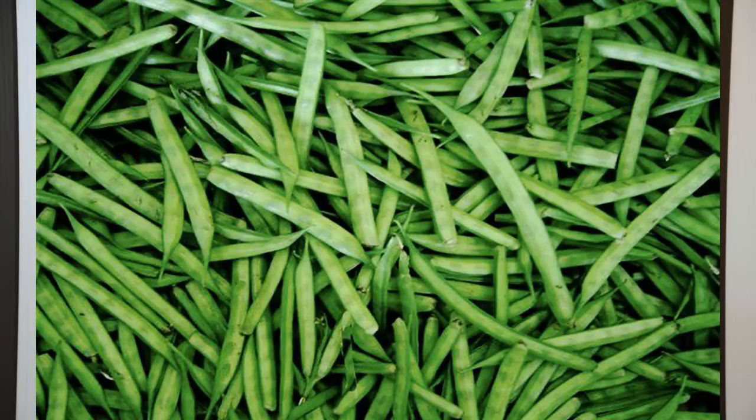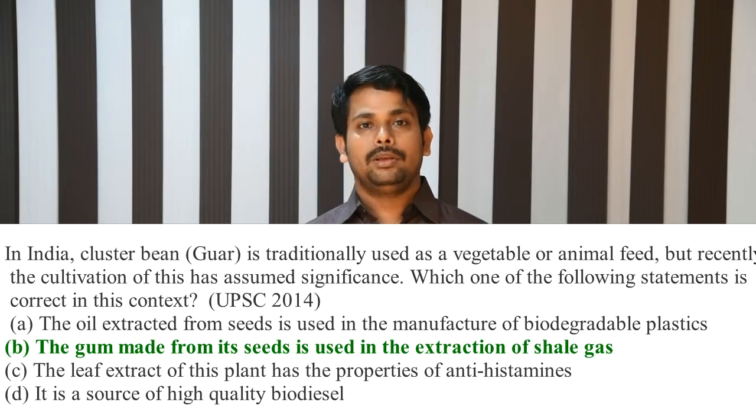Let us take the example of guar seed, sometimes called cluster bean — a leguminous plant widely cultivated in North India, used as cattle feed and to enrich the soil's nitrogen content. This guar seed appeared in the 2014 question paper. For a person who believes in UPSC's unpredictability, they would say UPSC randomly picked this cattle feed from hundreds of crops. But if you do a reverse engineering process — tracing back from guar seed to current issues — you can identify obvious reasons why it appeared.